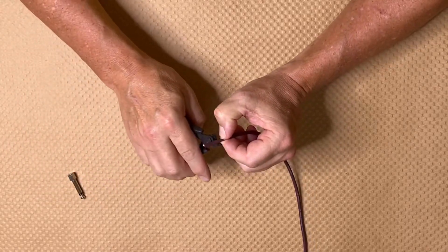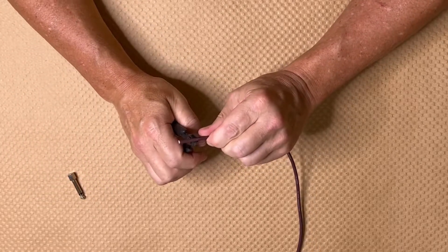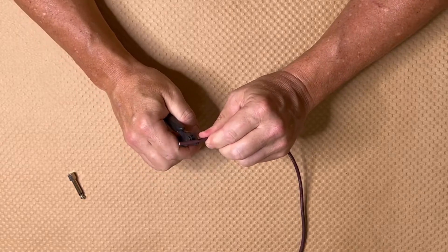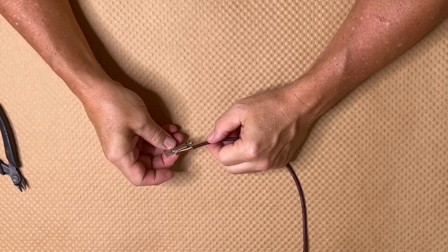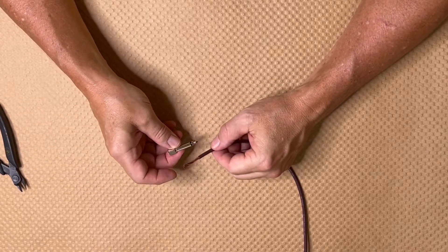Right there is where you want to score the jacket. Just do a little gentle impression and then you can pull it off. That will give you the proper measurement for that length.